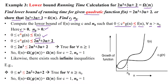Here the dominating term is the nth term with degree 2. So the n² term is the dominating term when compared with the degree 1 term and the constant. So we are ignoring these two lower-order terms.